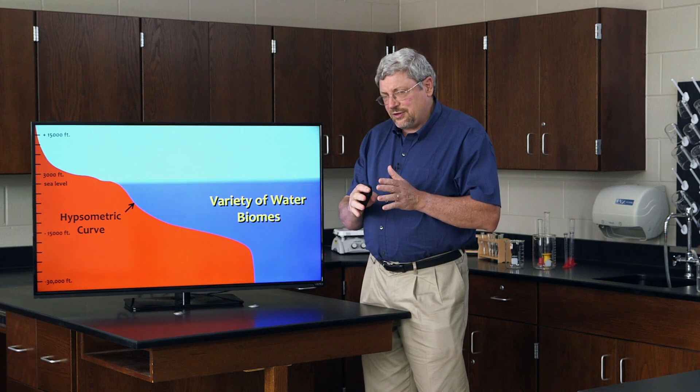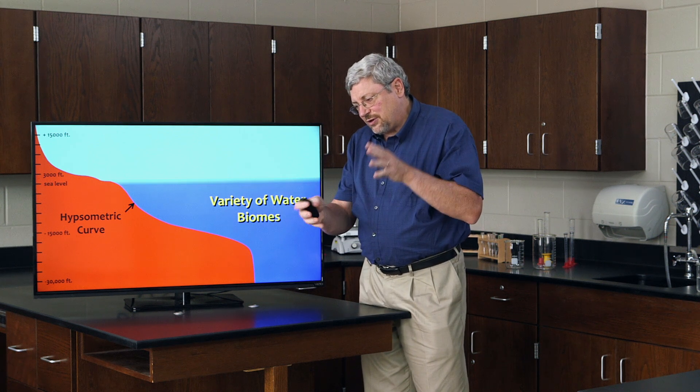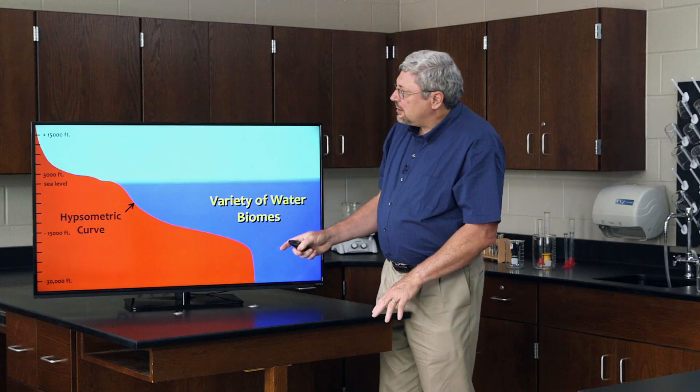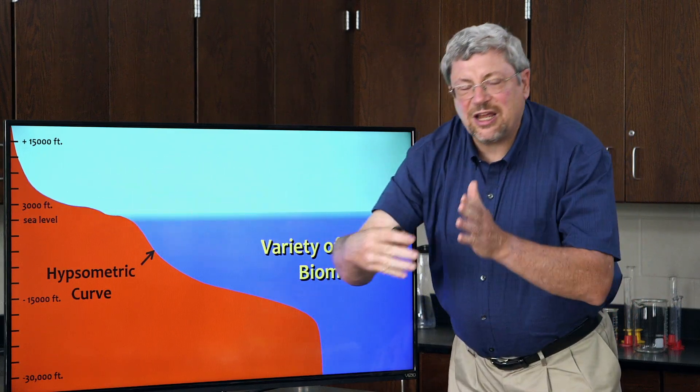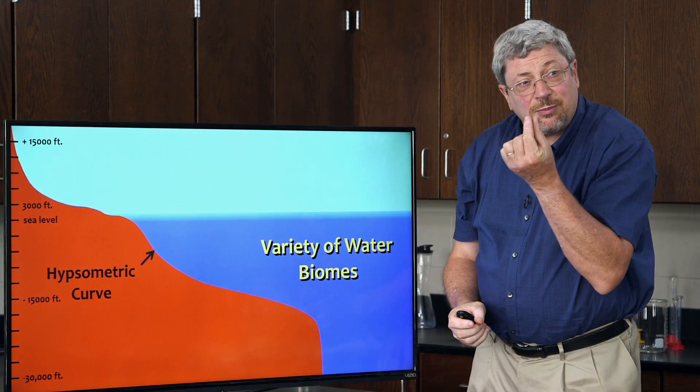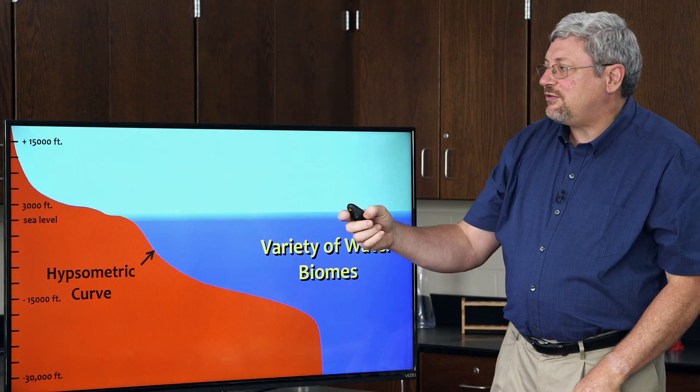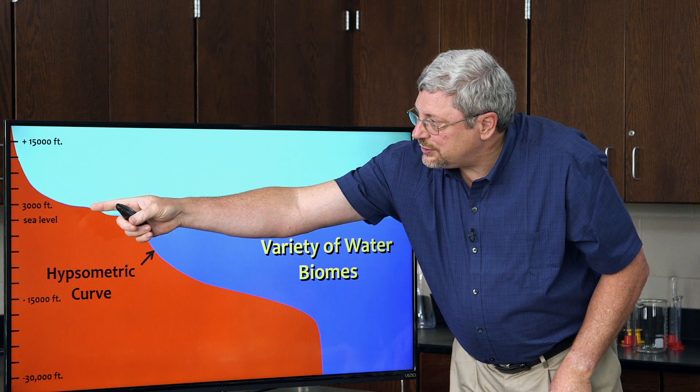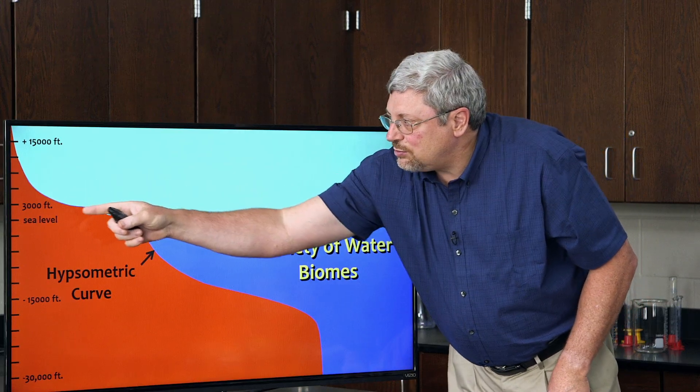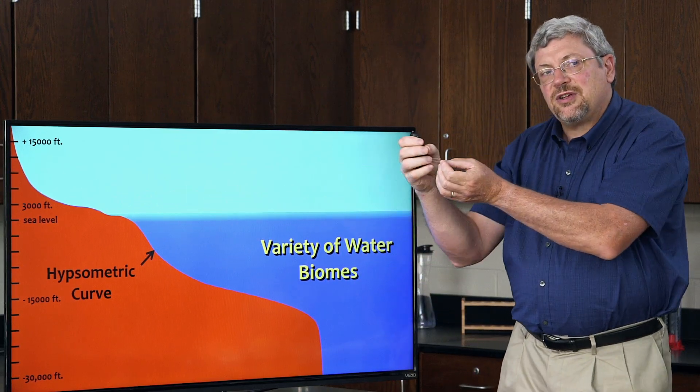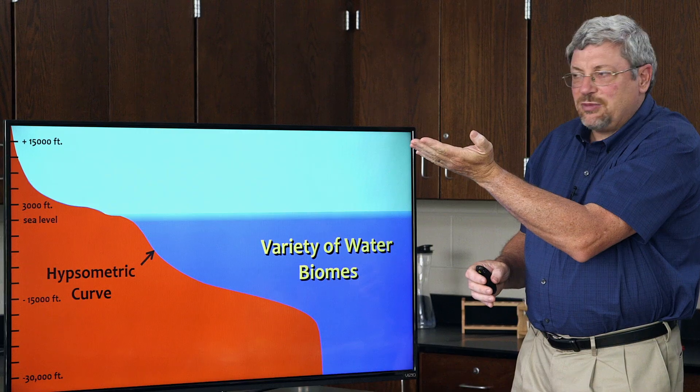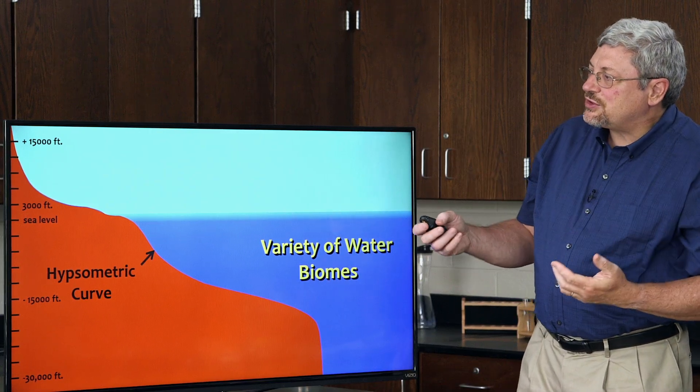If you took all of the altitudes above sea level and the depths beneath sea level for the rocks of the earth and asked yourself how much area of the earth's surface is above, let's say, 15,000 feet, it's going to end up a very small percentage. As you come down to 3,000 feet above sea level, there's more earth's surface at that point. The hypsometric curve gives you a sense that whenever it's flatter, it indicates more of the earth's surface is at that altitude above sea level or depth beneath sea level than most of the rest of the world.